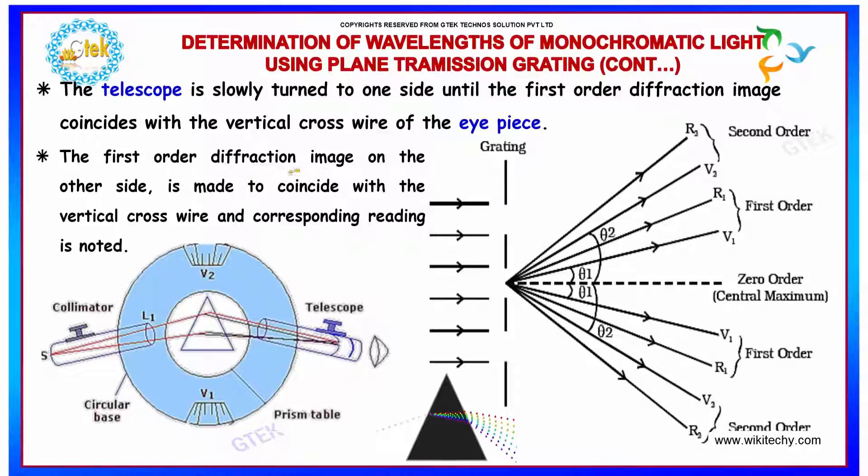The first order diffraction image on the other side is made to coincide with the vertical cross wire and corresponding reading is noted.